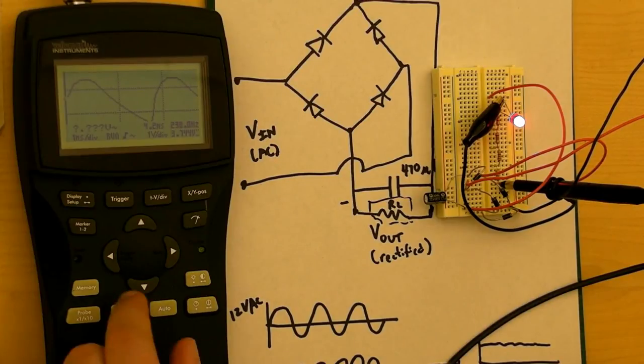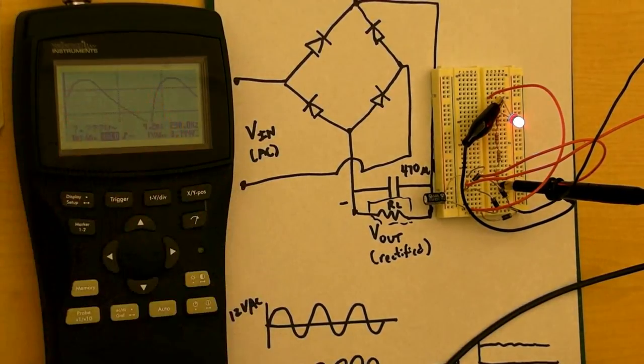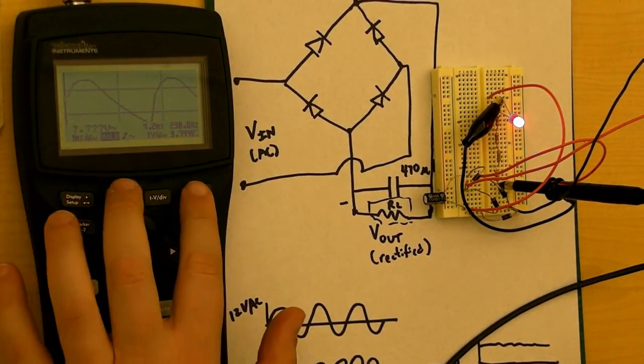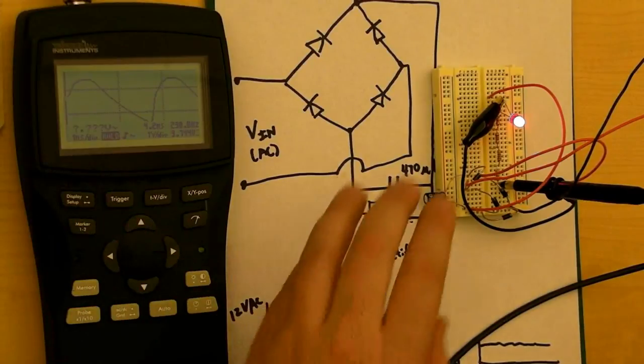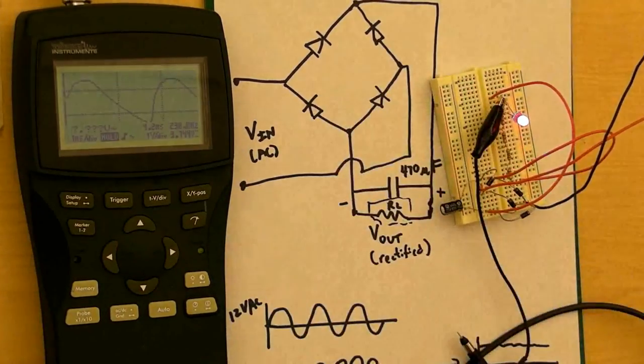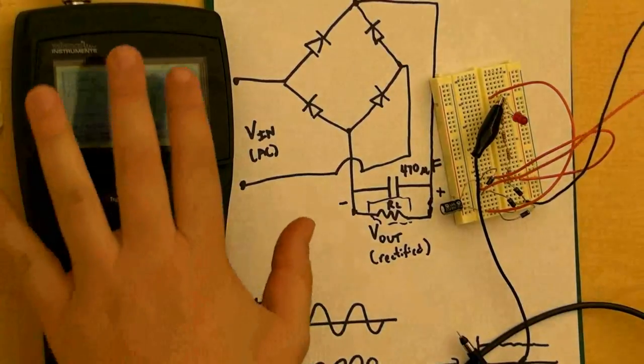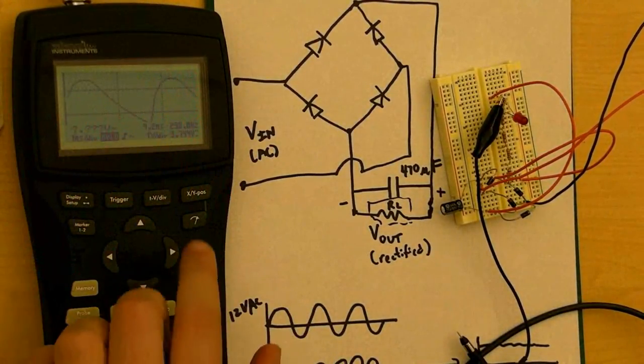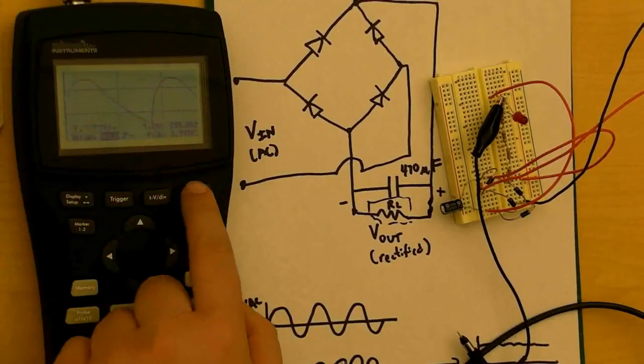Now let me show you one other cool thing, which is I can actually push memory here, and now it's going to hold what's on the screen. That's very useful because I can actually take my scope off now, and power my circuit, do whatever else I want, and maintain that signal in its memory. This is very useful because not only does it hold the signal that's on the screen.